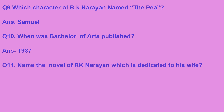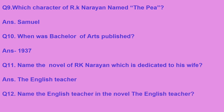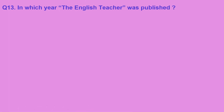Name the novel of RK Narayan which is dedicated to his wife. The third novel of the trilogy, The English Teacher, was dedicated to his wife. His wife's name was Rajam. Name the English teacher in the novel The English Teacher — Krishna was the English teacher in the novel. The English Teacher was published in 1945.